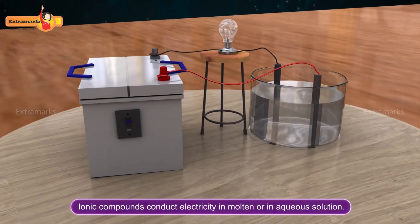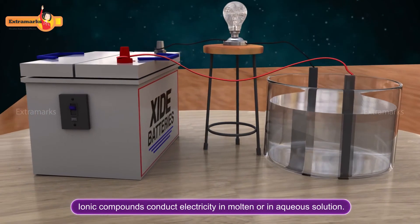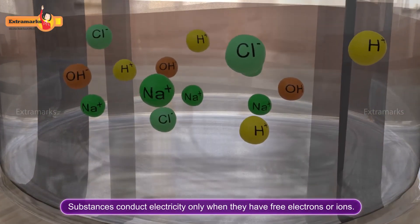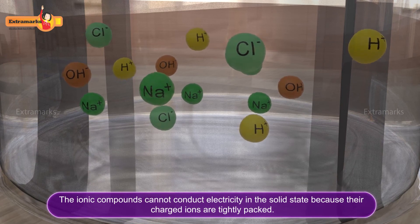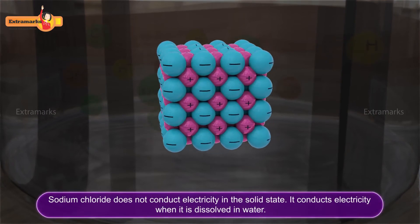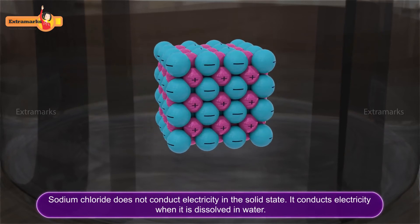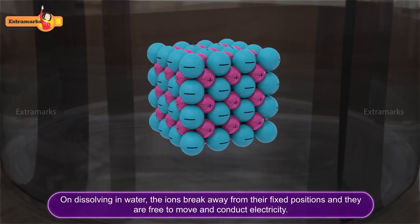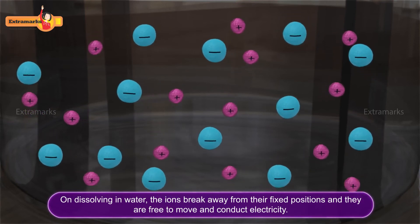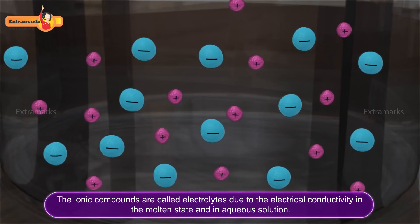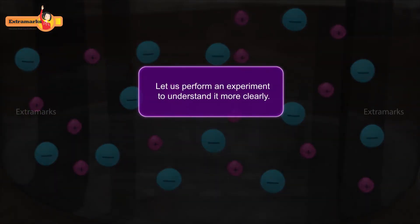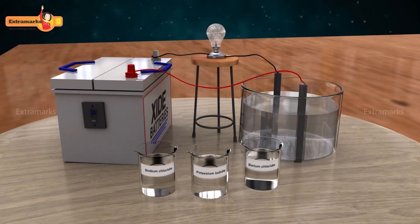Ionic compounds conduct electricity in the molten state or in aqueous solution. Substances conduct electricity only when they have free electrons or ions. Ionic compounds cannot conduct electricity in the solid state because their charged ions are tightly packed. For example, sodium chloride does not conduct electricity in the solid state. It conducts electricity when dissolved in water, as the ions break away from their fixed positions and are free to move. Ionic compounds are called electrolytes due to their electrical conductivity in the molten state and in aqueous solution.